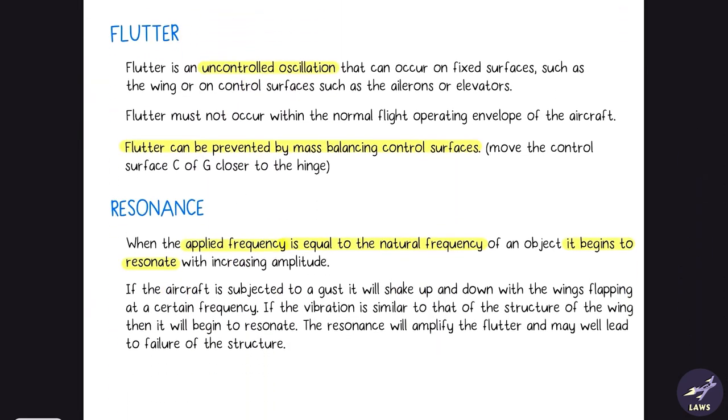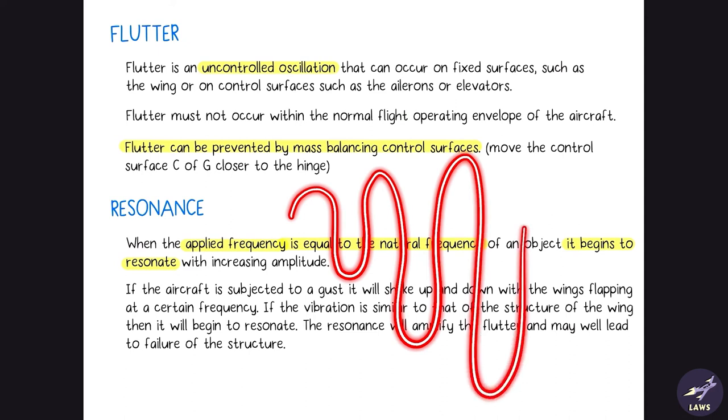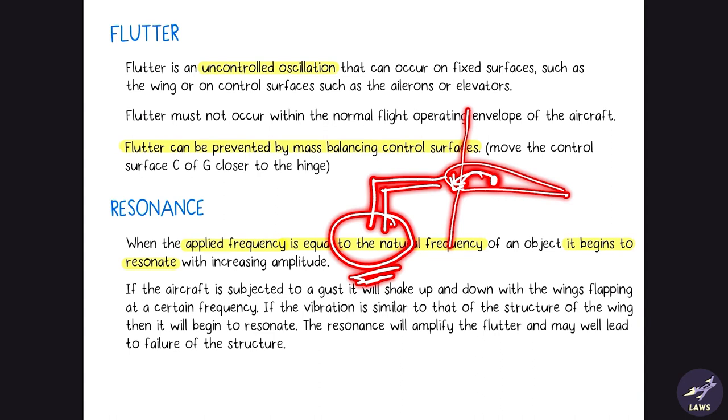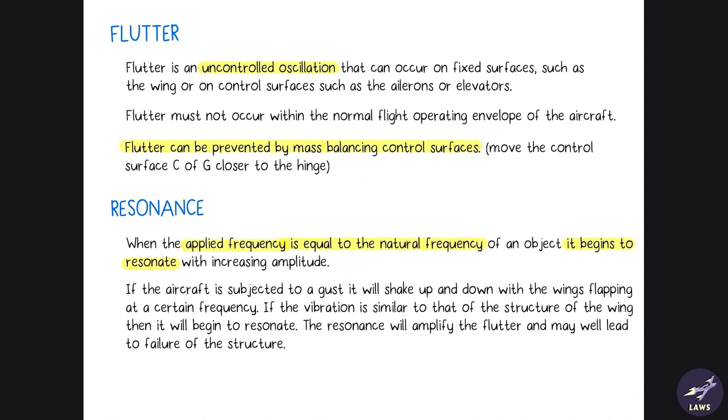Then we have flutter. We have covered this in principles of flight. Basically, in case the applied frequency due to anything, maybe due to gust, matches the natural frequency of the aircraft, the amplitude of the oscillation keeps on increasing and eventually it will cause the structure to damage itself. To prevent flutter, we use mass balance. We have to add the center of gravity to the hinge line. To bring the center of gravity onto the hinge line, we have to add a weight here, and the flutter issue will be taken care of.